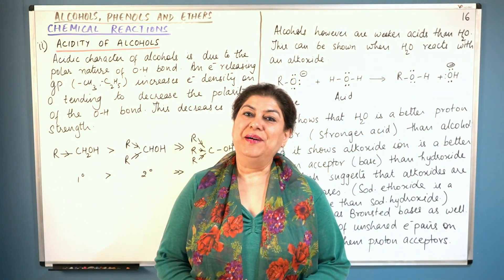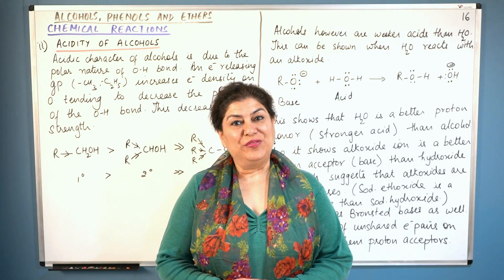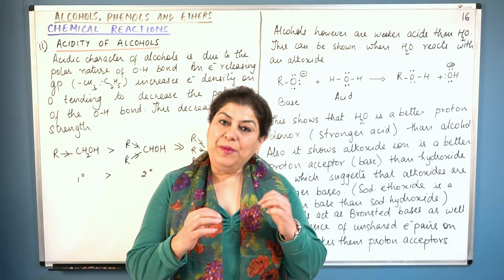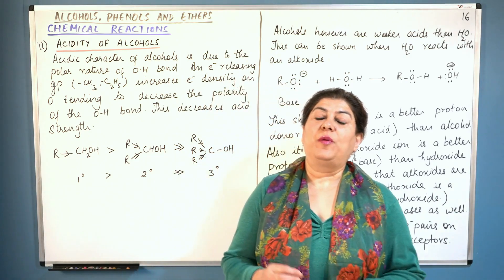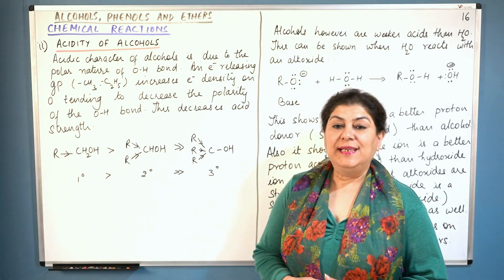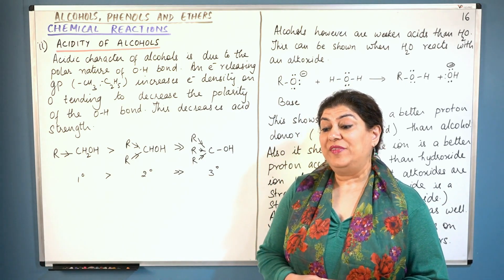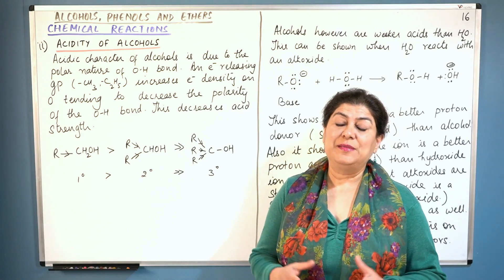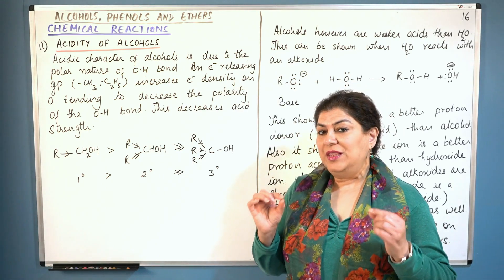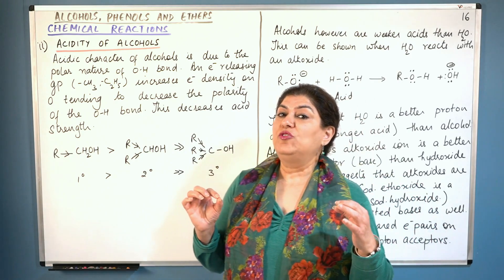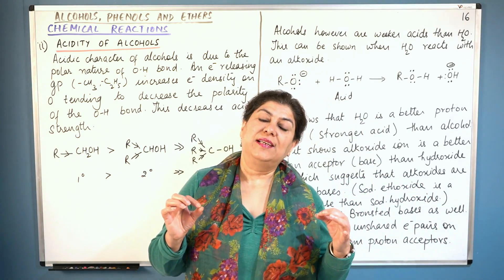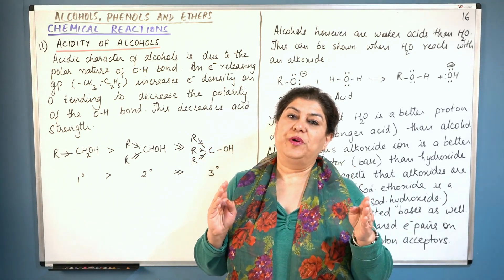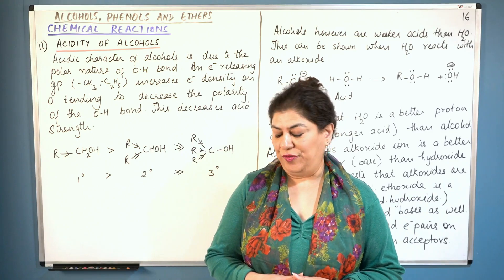Hello, I'm Seema and welcome to part 16 of the chapter Alcohols, Phenols and Ethers. We have been studying about the chemical properties of alcohols and phenols. Alcohols and phenols can act as nucleophiles and as electrophiles depending on which bond is breaking. When the bond between oxygen and hydrogen breaks, they act as nucleophiles, and when the bond between carbon and oxygen breaks, they act as electrophiles.